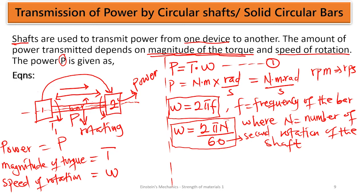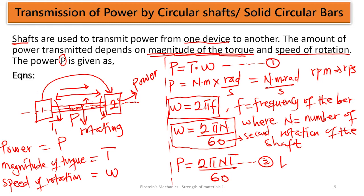Now we can bring this back into Equation 1 such that the power transmitted by a circular shaft becomes P = 2πnT/60. This is our final equation for power transmitted by a circular shaft or solid circular bar, measured in Watts. When given the angular speed directly, multiply by the torque to get the power. If given the number of revolutions per minute, use the expression with 2πnT/60.